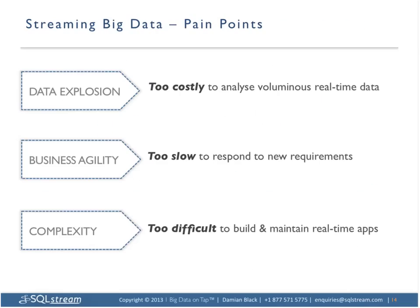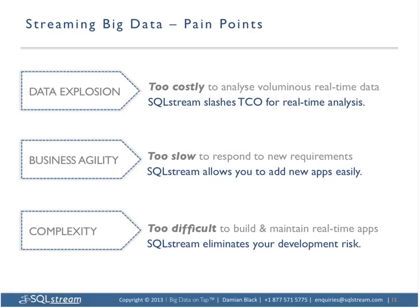Where does the pain come from? It's three-fold. First, the data explosion problem — exponential growth in data volumes making it too costly to analyze in real time using conventional techniques. Second, business agility — you're not able to respond quickly enough to new market requirements, seeding grounds to new upstart competitors. Third, complexity — the headache of using parallel processing to take advantage of modern inexpensive multi-core and blade server architectures, which is very difficult with conventional parallel technology involving threads, race conditions, and lock-ups.